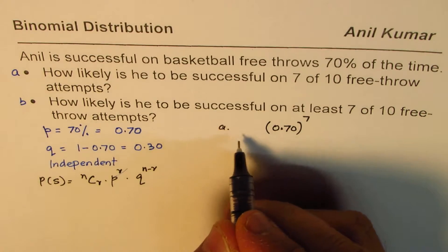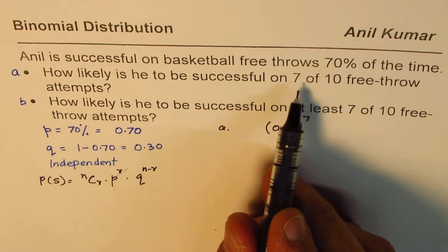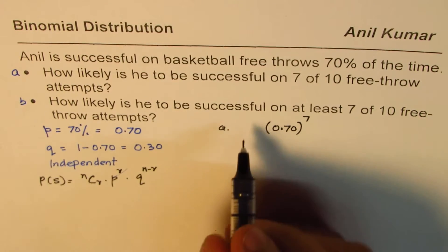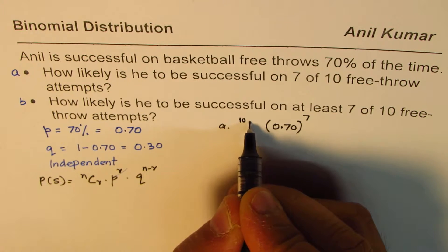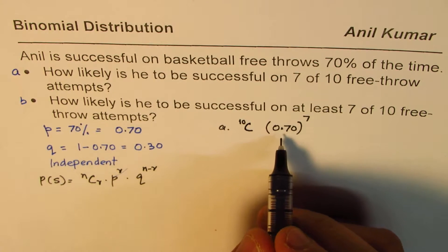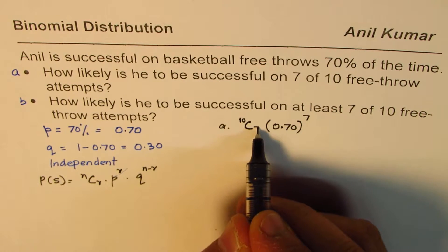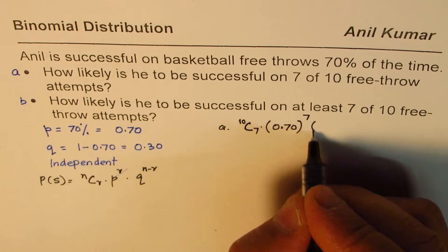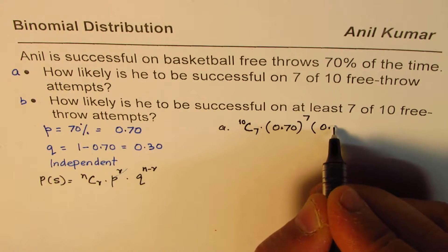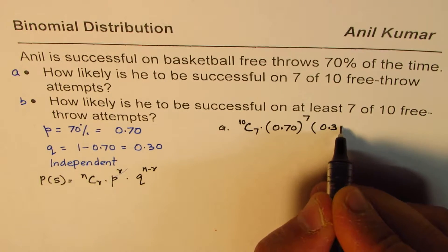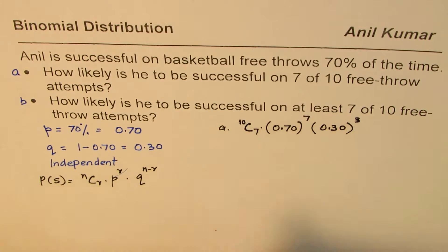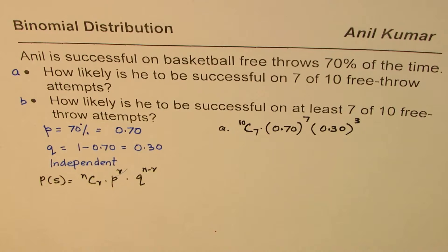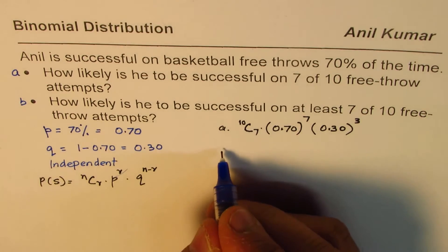For Part A, probability of 7 out of 10: it is 10C7 times 0.7 to the power of 7, times 0.3 to the power of 3, since failure is 30% and 3 are failures out of 10 total trials. You can use a calculator to find the answer.